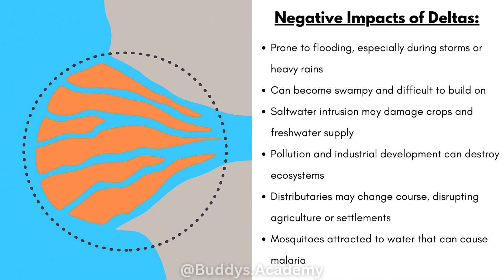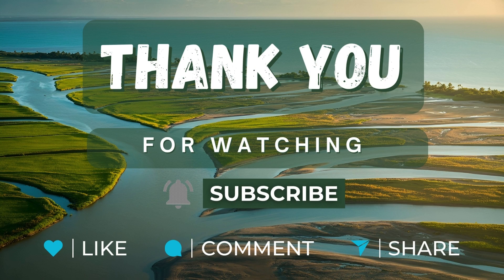Now what are the negative impacts of deltas? Firstly, they're prone to flooding, especially during storms or heavy rains. Secondly, they can become swampy and difficult to build on. Thirdly, salt water intrusion may damage crops and the fresh water supply. Pollution and industrial development can destroy ecosystems. Distributaries may change course, disrupting agriculture or settlements. And because there's standing water, mosquitoes are attracted to it, which can cause malaria.